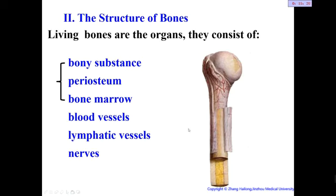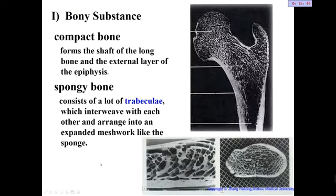Now let's look at the structure of bone. Bone is a living organ and consists of several structures: the bony substance as the basis, a periosteum surrounding it, and a cavity in the middle filled with bone marrow. There are also many blood vessels, lymphatic vessels, and nerves. The bony substance has two types: compact bone and spongy bone.